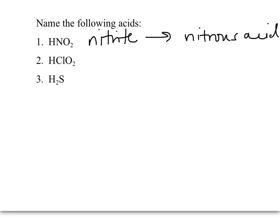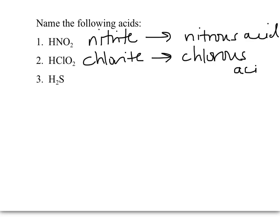In HClO2, we have a ternary acid — it's made of more than two elements. ClO2 is the chlorite polyatomic ion. The '-ite' ending is changed to '-ous,' and we have chlorous acid.